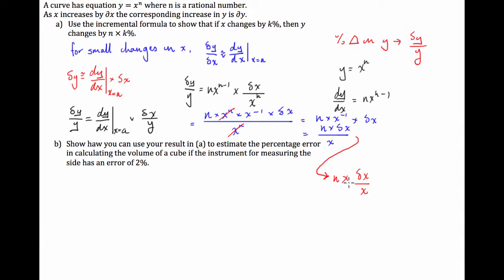This is going to be equal to n times delta x over x. Now it says here in the question that if x changes by k percent, or delta x over x is the percentage change in x, so this is going to be equal to just n times k percent which is what they're asking for. So now that we're done with part a let's get straight on to part b. Show how you can use your result to calculate the percentage error in calculating the volume of a cube if the instrument for measuring the side has an error of 2%.